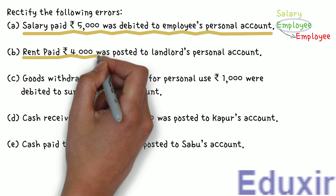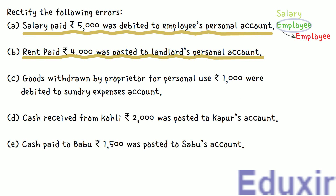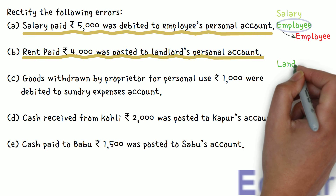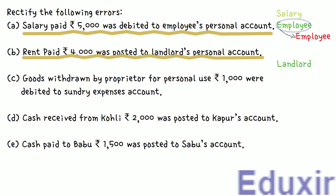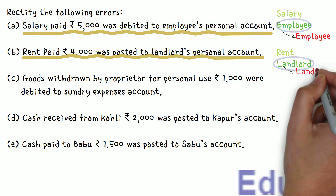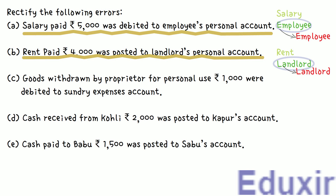Next error: Rs. 4,000 of rent paid to the landlord was debited to landlord's personal account. The effect of the wrong entry is to debit the landlord's personal account, and assuming payment is in cash, the cash account is credited. This is an error of principle. The correct entry: debit the Rent Account (as rent is an expense), and credit the Cash Account. The cash account is credited correctly, so we leave it. The error is with debiting the landlord's personal account. Rectification: debit Rent Account Rs. 4,000, credit Landlord's Account Rs. 4,000.